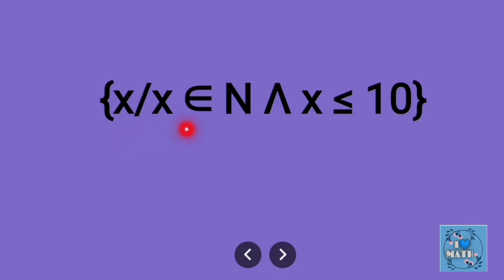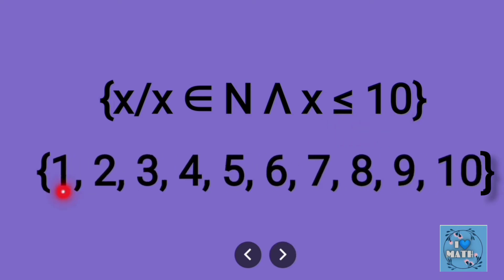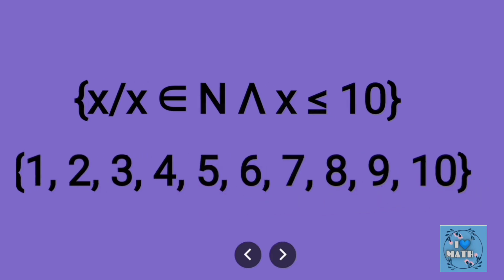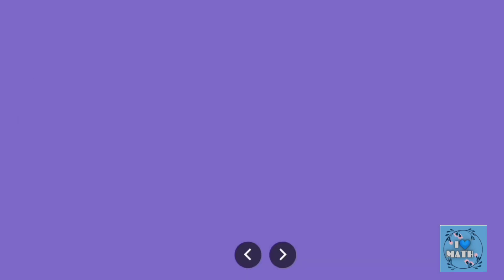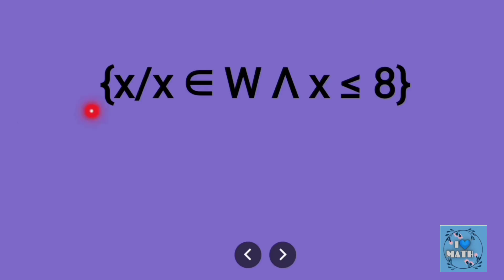Next: { x | x ∈ N, x ≤ 10 } — it means all natural numbers from 1 to 10. Then { x | x ∈ W, x ≤ 8 } — it means these are the whole numbers from 0 to 8.